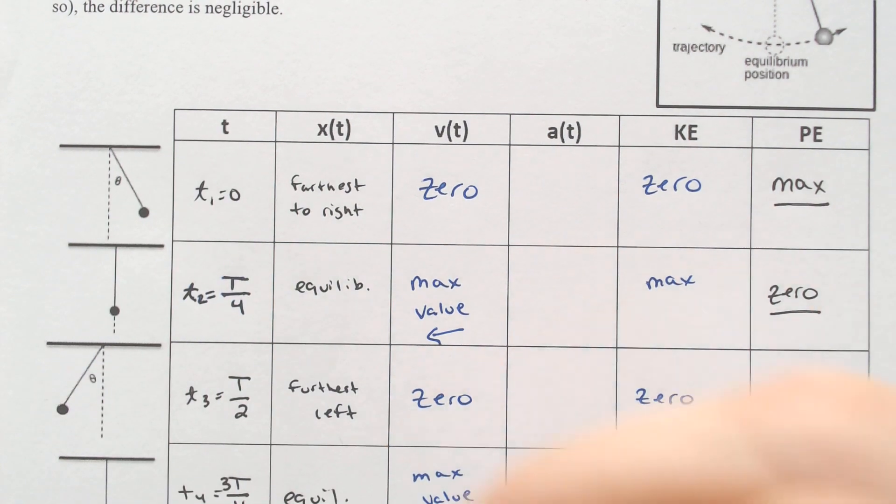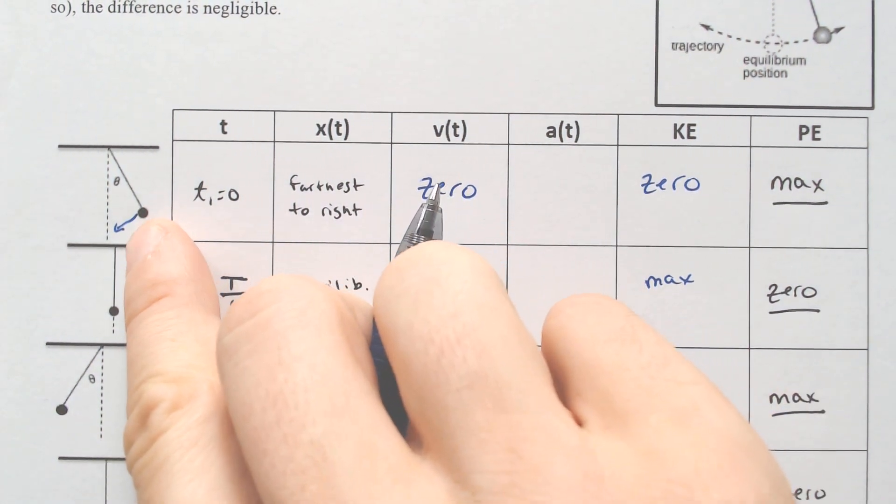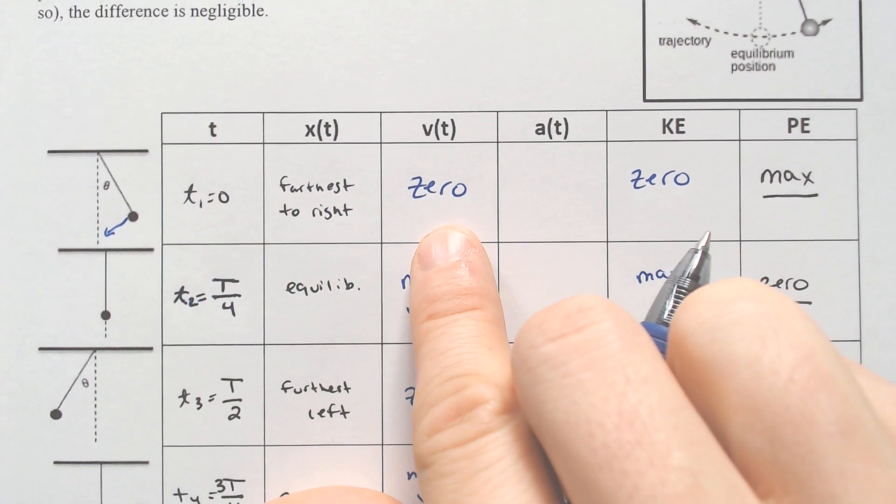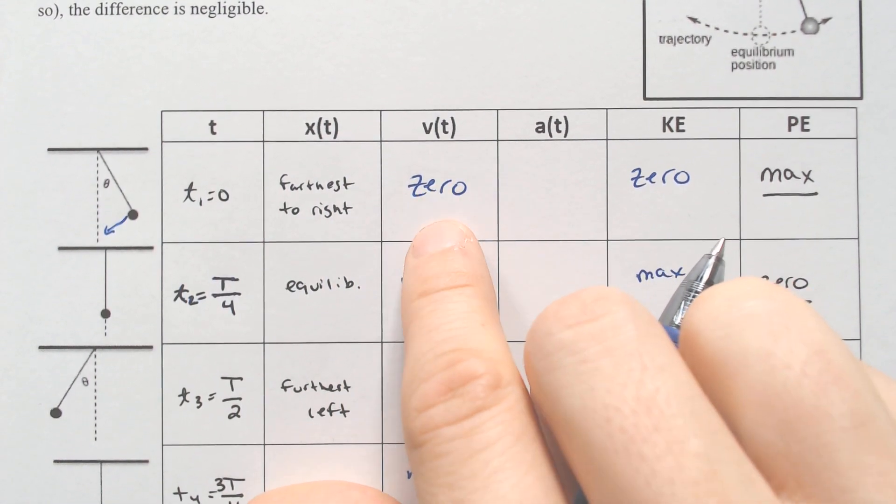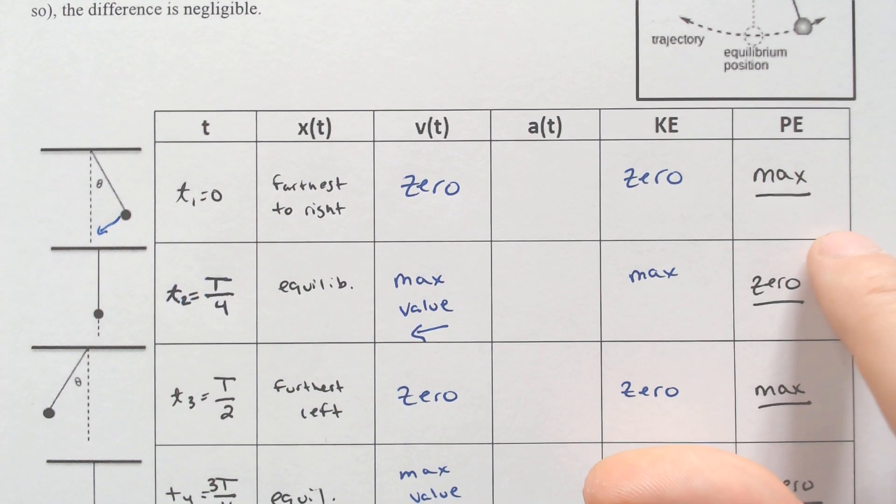And after that moment, if it is released, not pushed, released, it is going to start moving and following that curve downward. At this point right here, the time is zero. It is the furthest to the right, and we are not moving. And if you're not moving, you have no kinetic energy, and the potential energy is at its maximum.